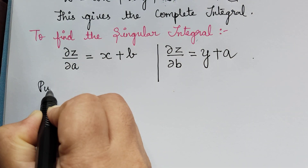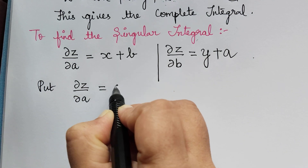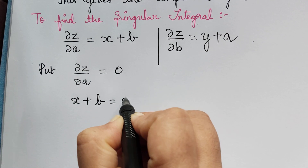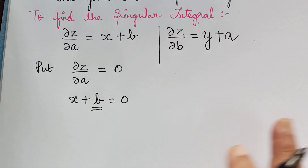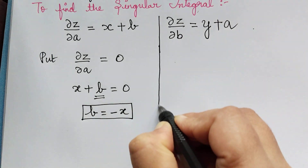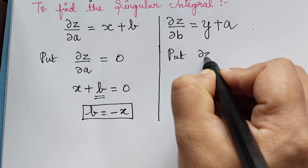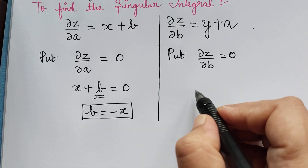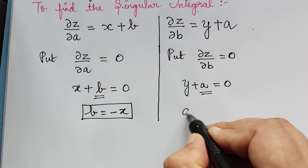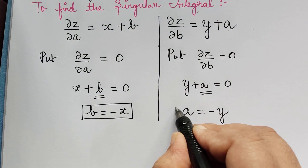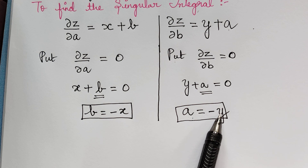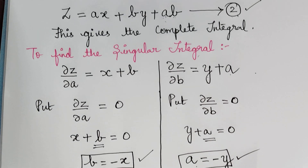Setting ∂z/∂a = 0 gives x + b = 0, so b = −x. Setting ∂z/∂b = 0 gives y + a = 0, so a = −y. We are finding a and b because we want to eliminate them. We now have b in terms of x and a in terms of y, and we shall substitute a and b into equation 2.